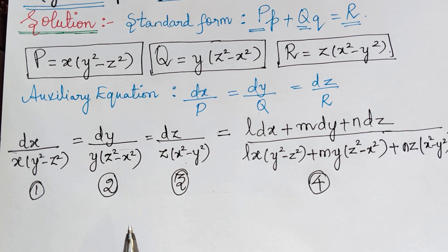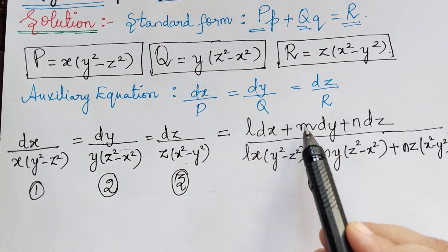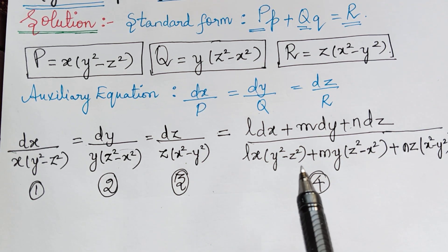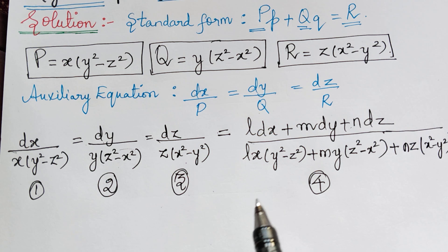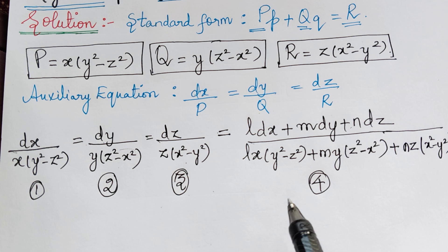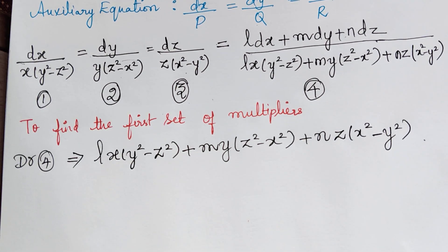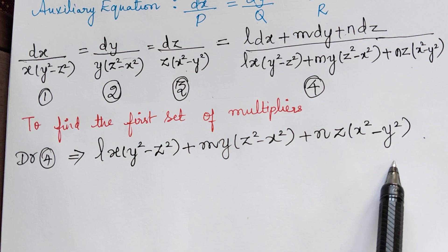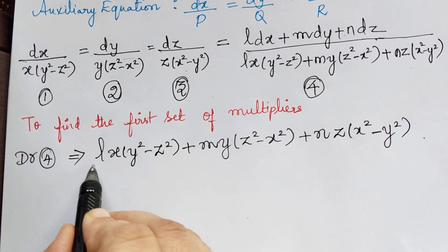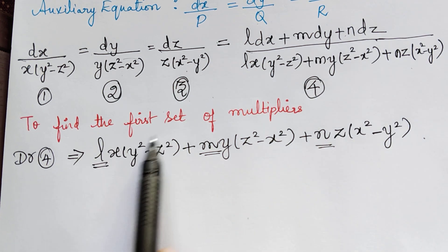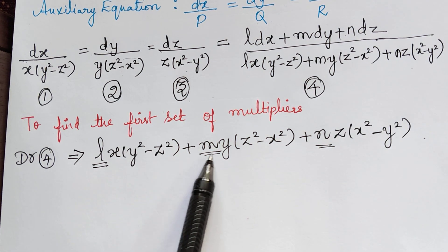Now in order to find solutions U and V, we have to choose multipliers L, M, and N such that the denominator of this fourth ratio becomes zero. We need two sets of multipliers since we need to find solutions u and v. Let us find the first set of multipliers by considering the denominator of ratio 4, and choose values for L, M, and N to make it zero.